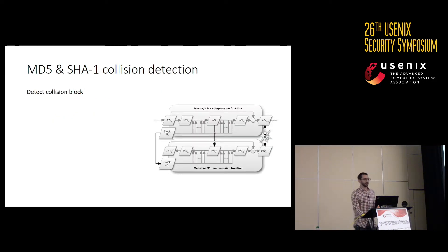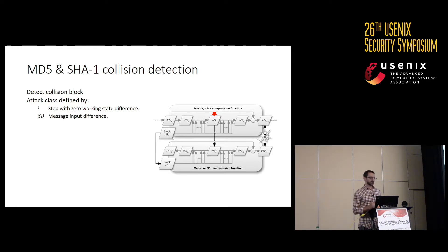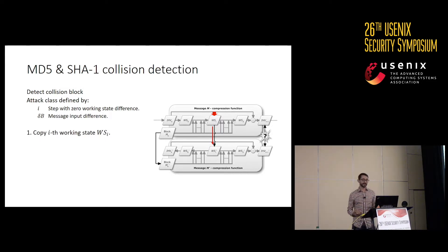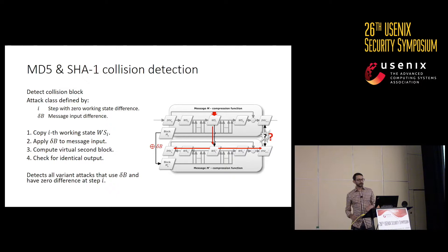The collision detection algorithm works as follows. We start with an attack class — all collisions that have a zero difference at the i-th step of the compression function, and this delta-B message difference between the colliding blocks. We copy the i-th state over, apply delta-B to the message input, compute the virtual second block by computing forward from the i-th state and backwards from the i-th state to get the initial value. Those are combined to give the output of the compression function, and we just check for identical output. This detects all variants of the attack that have a zero difference at step i and message input difference delta-B.